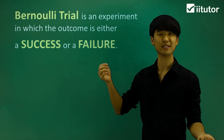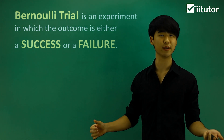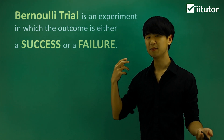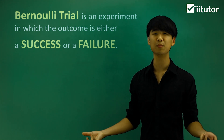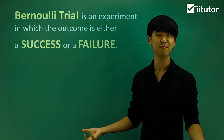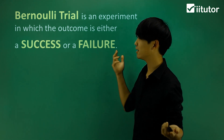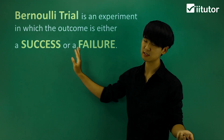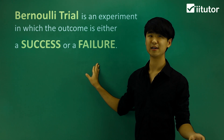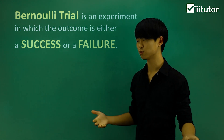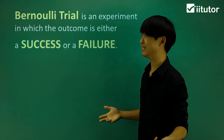A classic example of this is if I flip a coin. My outcome is either going to be I get a head or I don't get a head. So I either get a success or a failure. That's what a Bernoulli trial is.